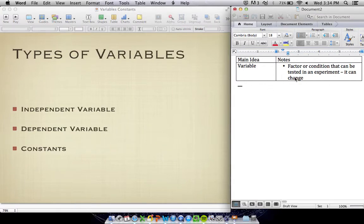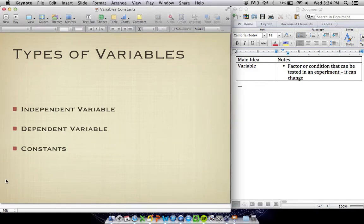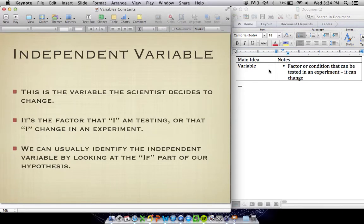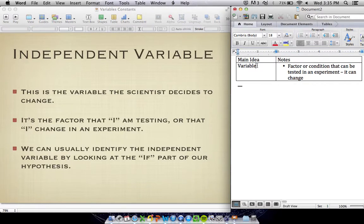We have three types of variables that we're going to test today. We have an independent variable, we have a dependent variable, and we have these things called constants. We're going to talk about each in order. The first thing in an experiment is this thing called the independent variable.